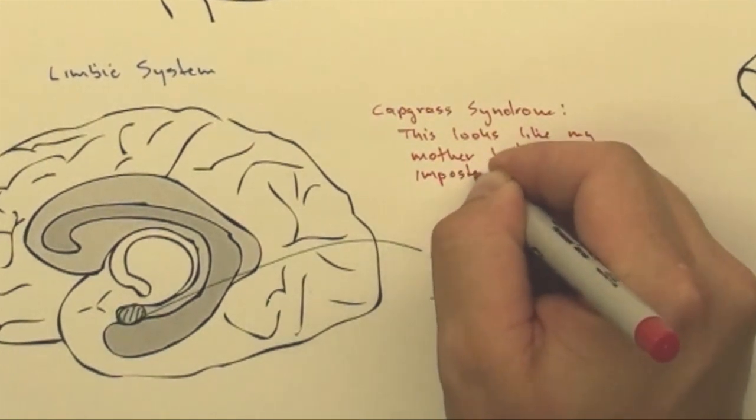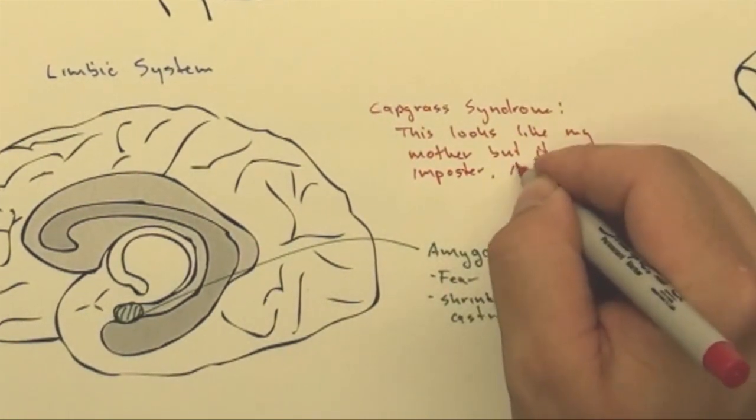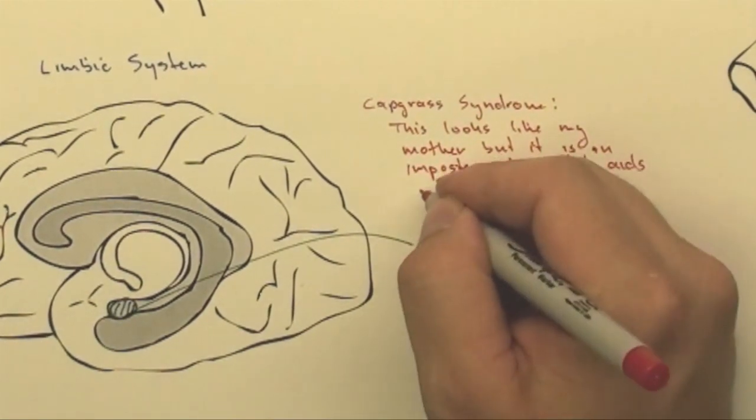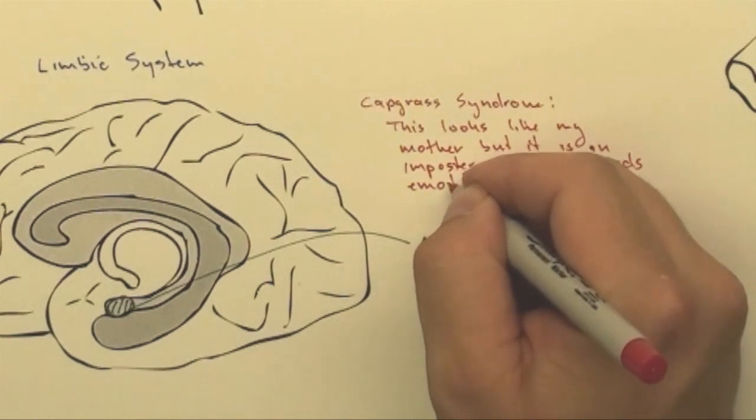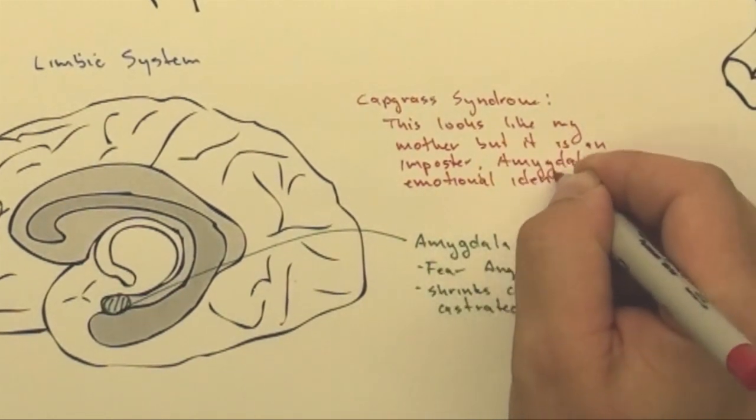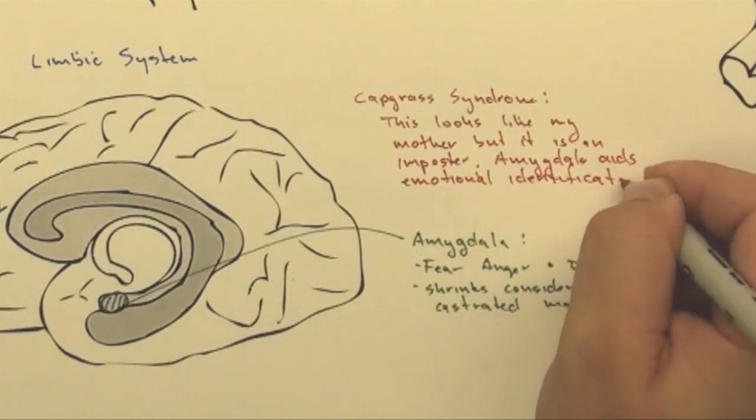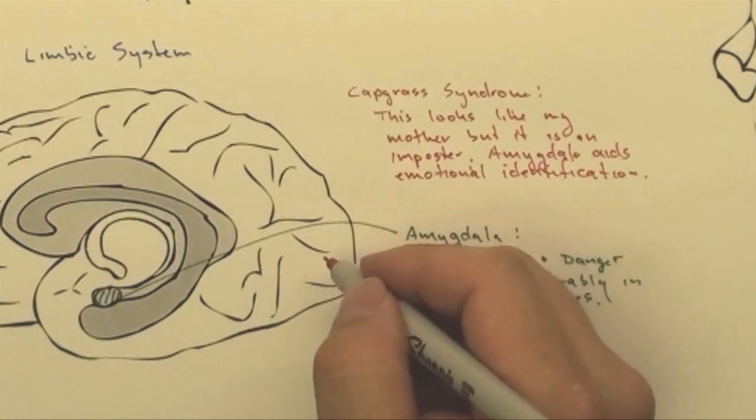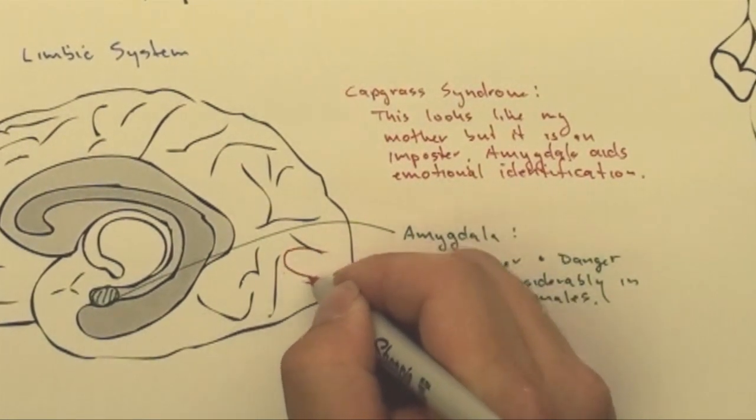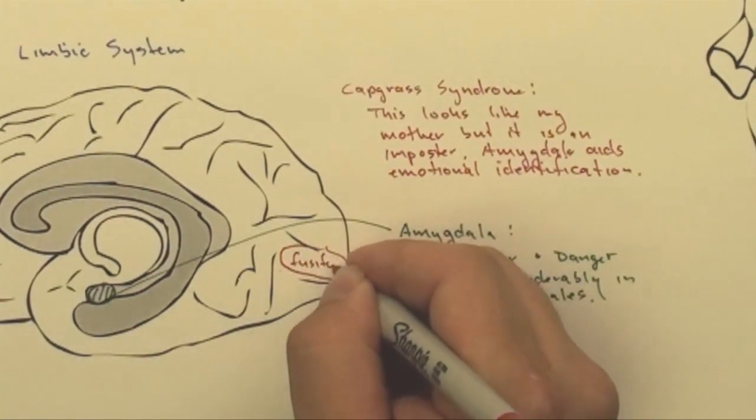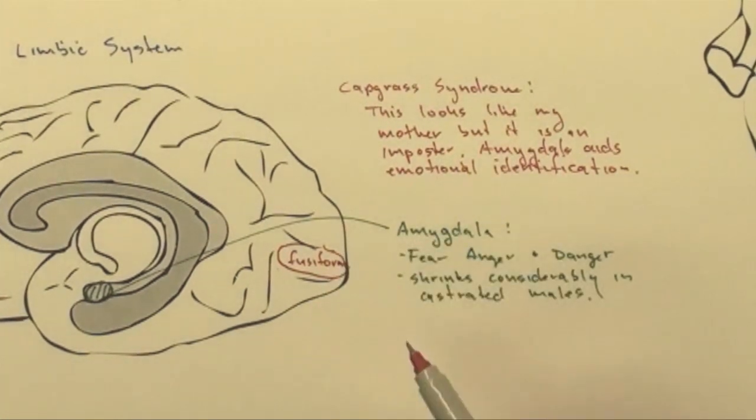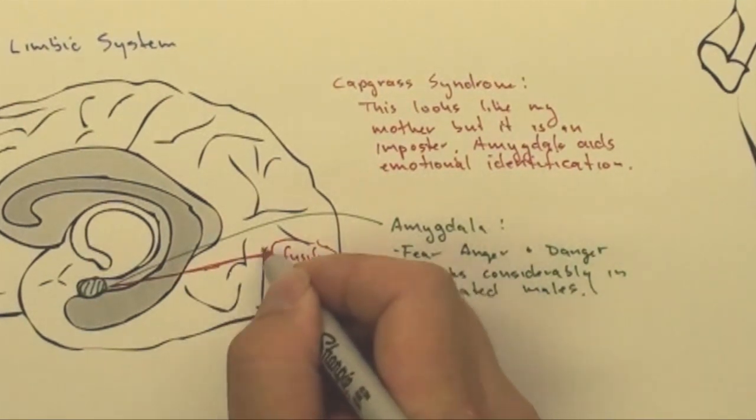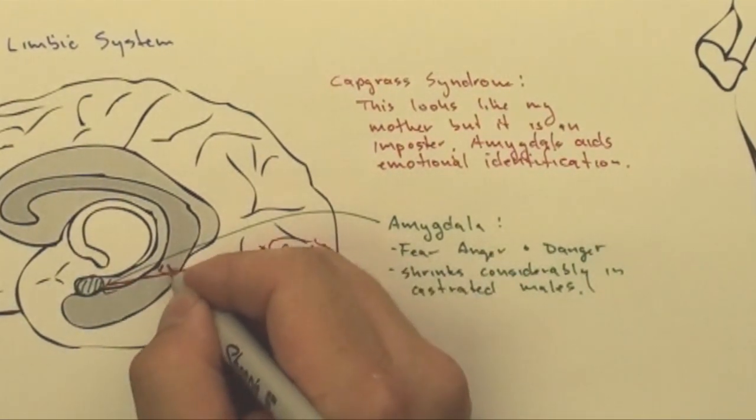And what this tells us is the amygdala aids emotional identification. So your brain does not say that it's a picture of your mom until you have some kind of feeling associated. So we had this area back in here that was called the fusiform gyrus. I'm just going to write fusiform.